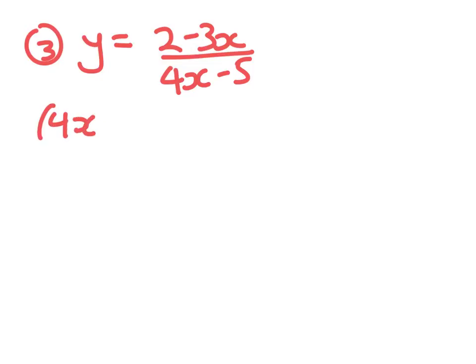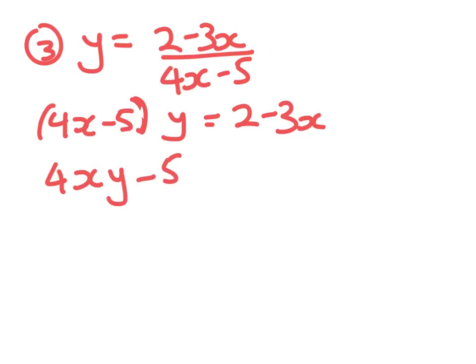Number 3. Basically, it's very similar. So we cross-multiply, 4x minus 5 times y equals 2 minus 3x. 4xy minus 5y equals 2 minus 3x.